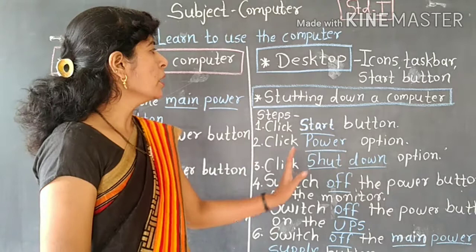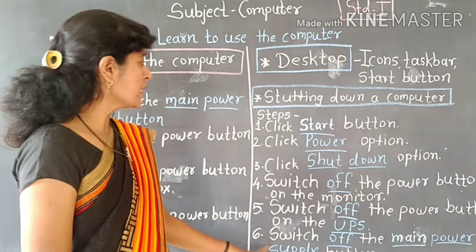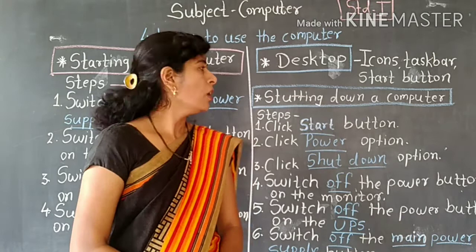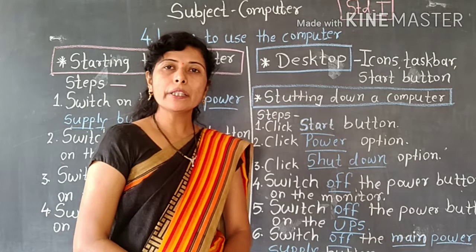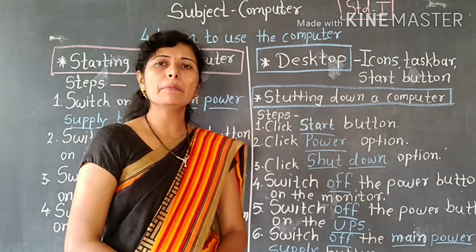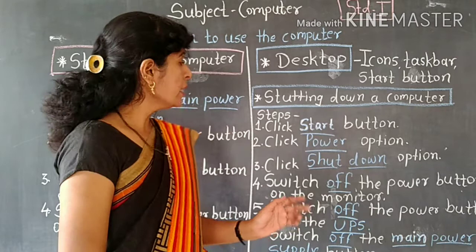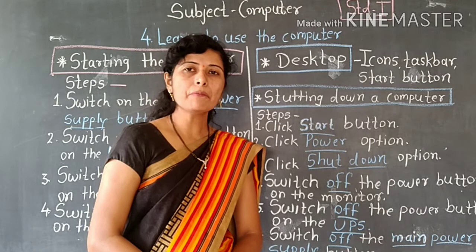To shut down the computer, how many steps are there? There are six steps total. If you count the steps to switch on and switch off, you can easily understand how many steps are needed to start and how many steps are needed to shut down.